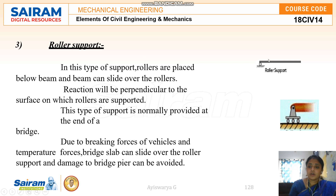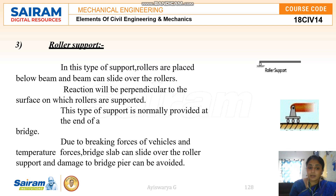The next one is roller support. Whenever you see a support in the form of a roller, you can identify it as a roller support. In this type of roller support, rollers are placed below the beam and the beam can slide over the rollers. The reaction will be perpendicular to the surface on which the rollers are supported. In the roller support, you will get only one vertical reaction, perpendicular and towards the beam. This type of support is normally provided at the end of bridges. Due to the braking forces of vehicles and temperature forces, the bridge slab can slide over the roller support and damage to the bridge pier can be avoided.